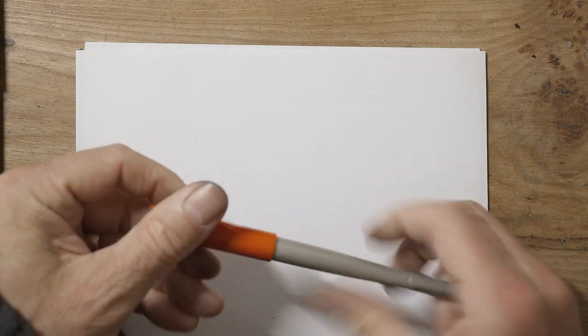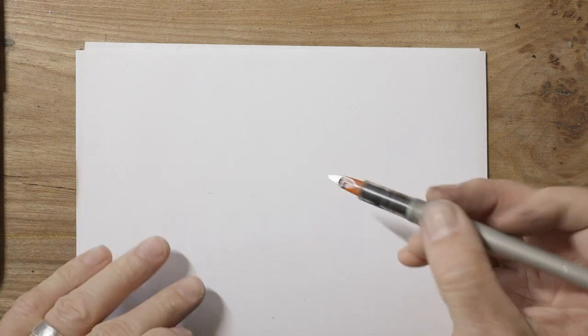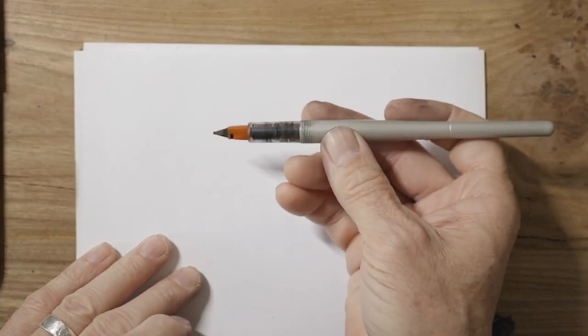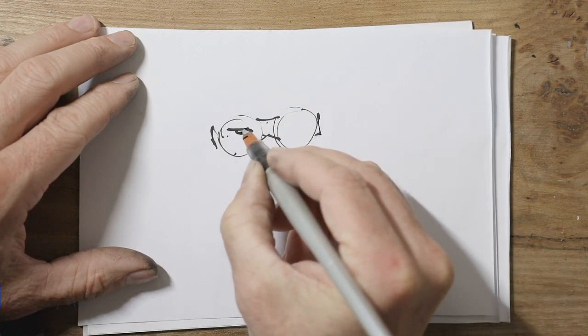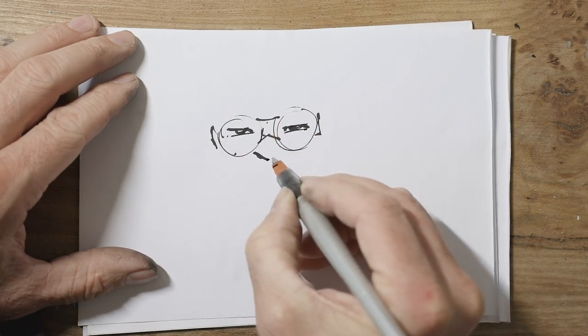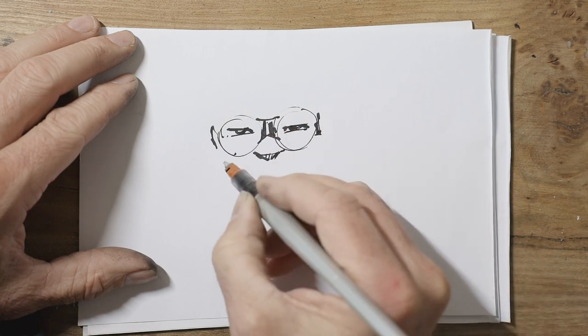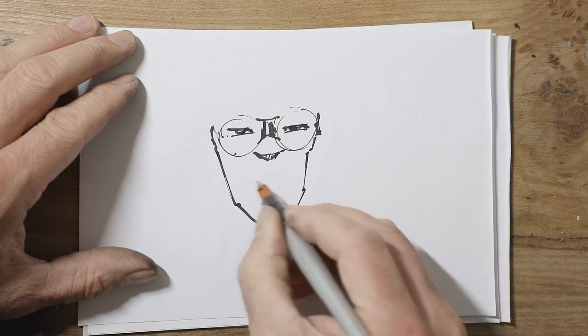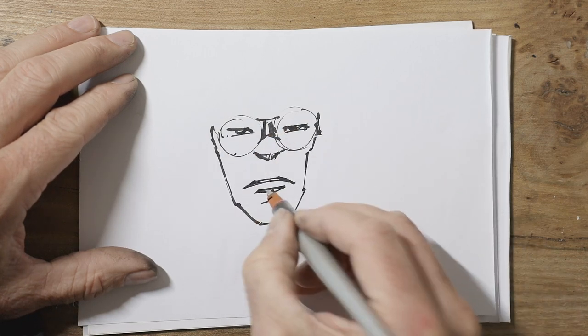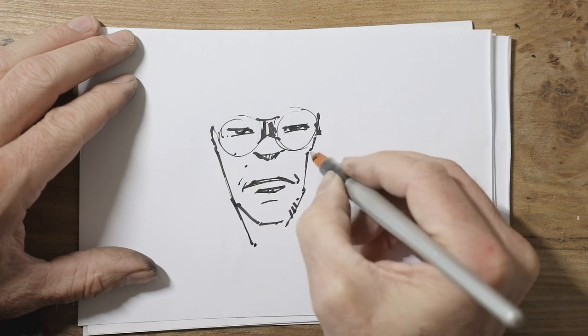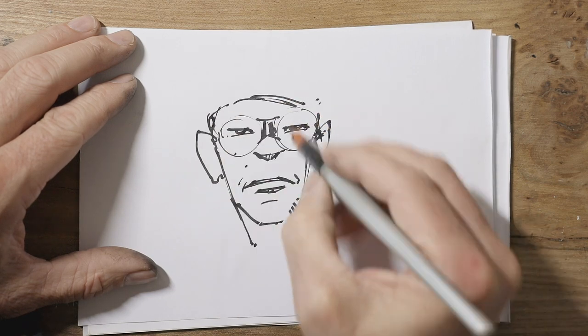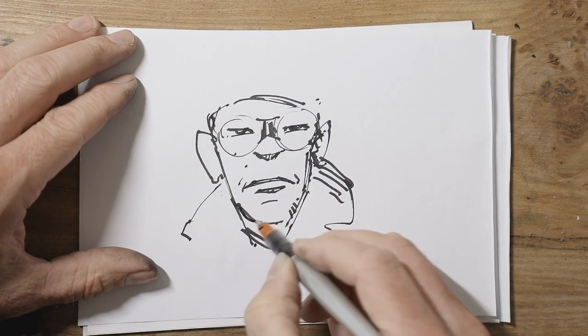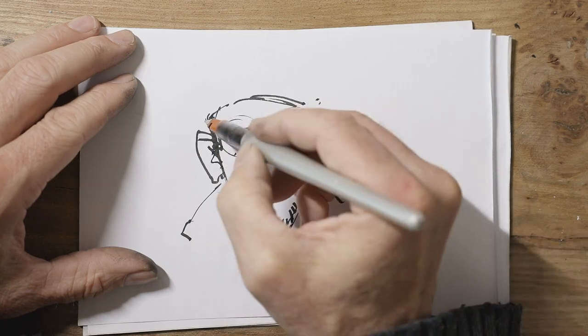So the first of those is actually a pen that's made for calligraphy rather than drawing. These are pilot parallel pens, and as I say they're made for writing really, because you can get lovely italic script. But actually as a drawing pen they're really interesting too, because you get this thick and thin line made by the nib, which is very broad in one direction and very thin in the other. So you get these interesting marks that it makes.